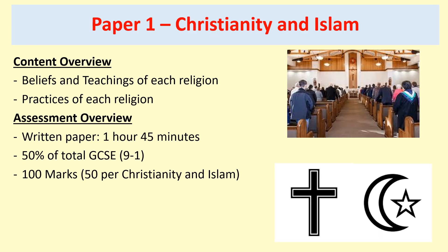To give a more specific overview of each paper — paper one on Christianity and Islam covers the beliefs and teachings of each religion in one section, and the practices of each religion in a second section. The assessment is one hour and 45 minutes, weighted at 50% of your total GCSE. The total marks available for this paper is 100 — 50 marks for Christianity and 50 marks for Islam — and the combination of those two gives your overall grade for that paper.